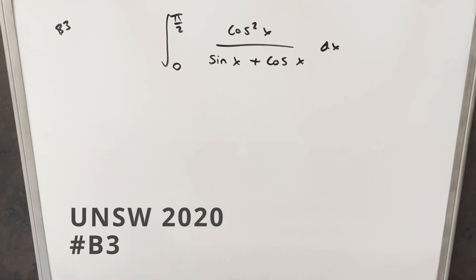Okay, continuing on today with the UNSW integration B from 2020, this was problem B3. We have the integral from 0 to π/2, cosine squared x over sine x plus cosine x dx.